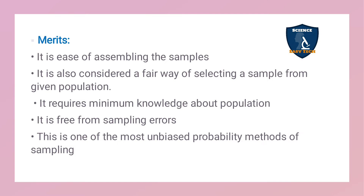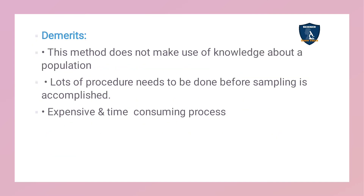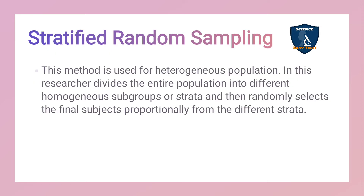The merits of simple random sampling are: it is easy to assemble subjects, considered a fair way of selecting subjects, requires minimum knowledge about the population, is free from sampling errors and bias, and is one of the best unbiased probability methods. The demerits are: it does not make use of knowledge about population, lots of prior procedure may be needed, and it can sometimes be expensive and time-consuming.